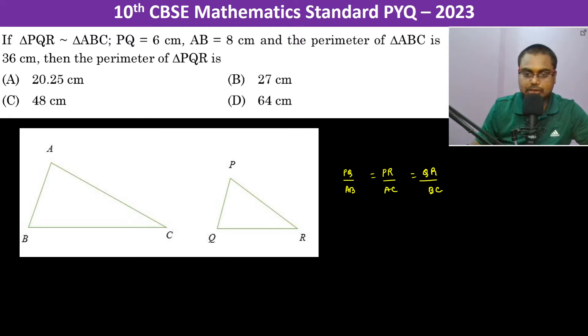Now, PQ is 6 centimeters and AB is 8 centimeters. Therefore we can write PQ by AB is equal to 6 divided by 8, which is equal to 3 by 4. So therefore we can write that PQ is equal to 3 by 4 of AB.